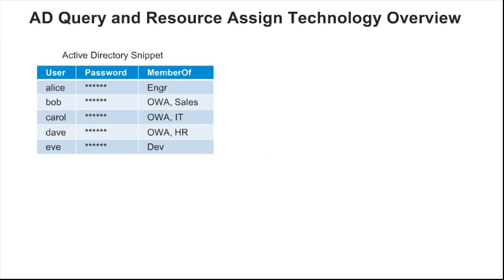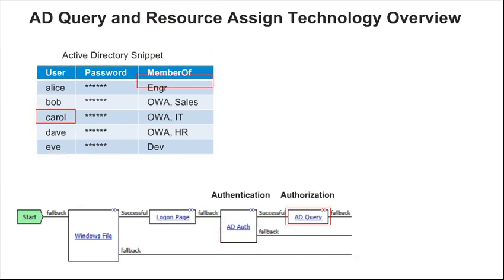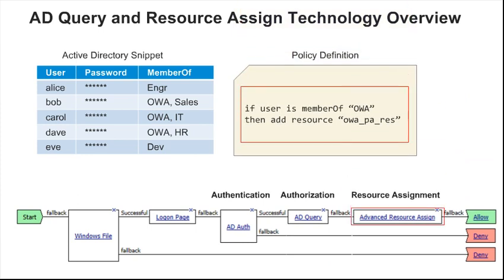Before continuing, let's take a quick look at ADAuth and ADQuery. When the access policy performs an ADAuth, it sends the username and password collected in the logon page action to the Active Directory domain controller, which evaluates the credentials. If they are correct, ADAuth passes control to the successful branch; if not, control is passed to the fallback branch. When the access policy performs an ADQuery, it sends the username to the domain controller and requests information about that user. Finally, the Advanced Resource Assign action can use that information to dynamically assign resources — that is, resources that are only assigned to a specific class of users.